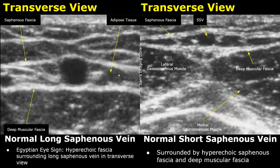This type of appearance is termed the Egyptian eye sign, where the hyperechoic fascia surrounds the long saphenous vein in transverse view. The short saphenous vein is also surrounded by hyperechoic fascia in a similar manner. Below the deep muscular fascia, we can also see the lateral and medial gastrocnemius muscles.